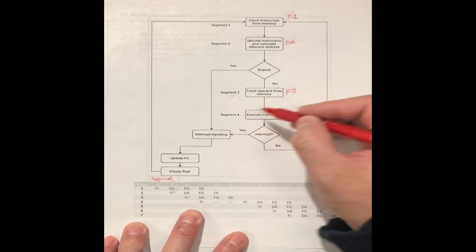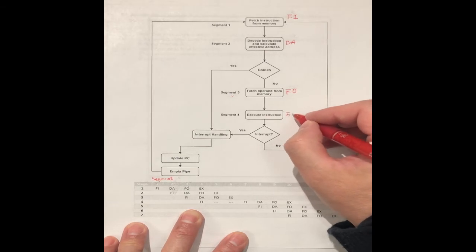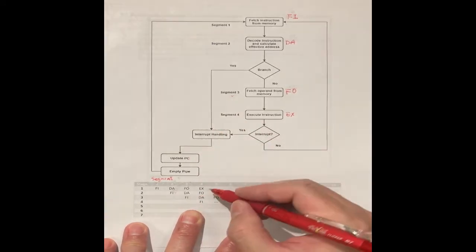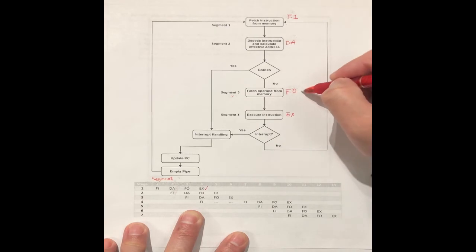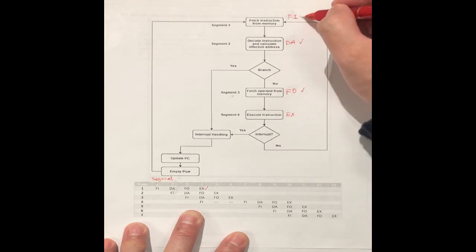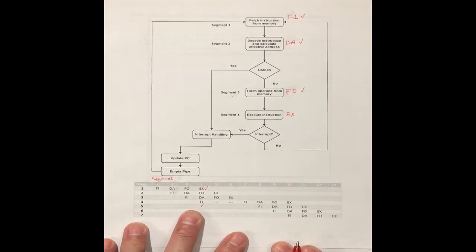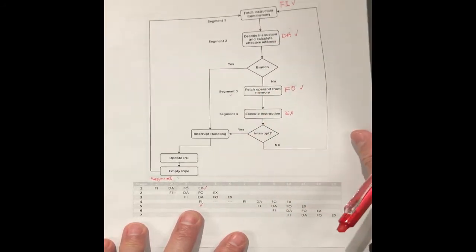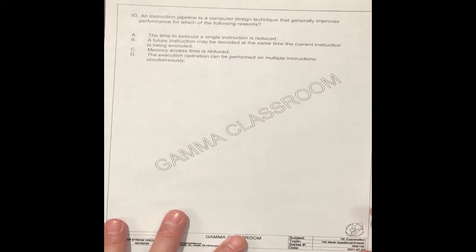In segment four, you can execute the instruction — we call it EX. And at the same time, the computer can also do FO, DA, and FI simultaneously. So this means the computer can execute different instructions at the same time.